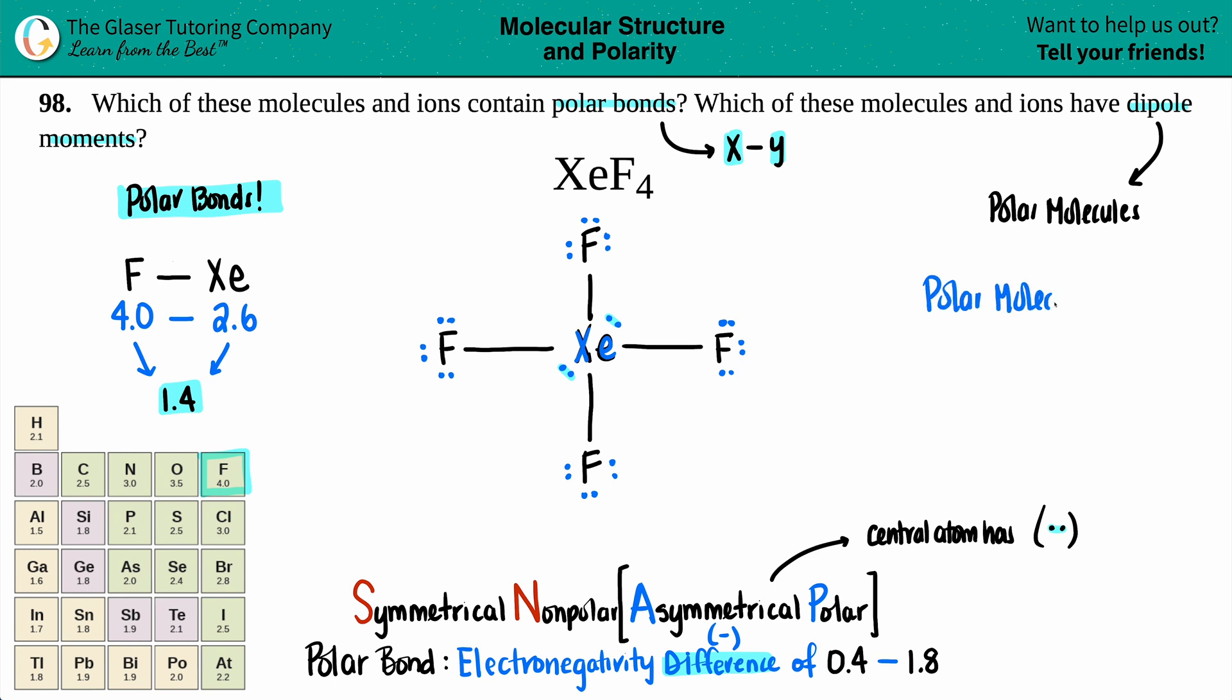And because of that, since it is a polar molecule, it is going to have the dipole moment, an unequal sharing of electrons in that molecule. And now, we have answered the question. So this guy's got polar bonds, and it's a polar molecule. So it's got a dipole moment. And that's it.